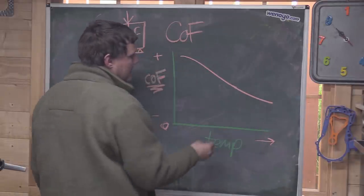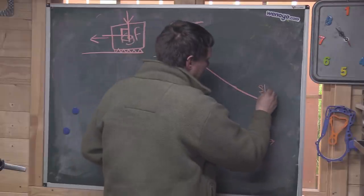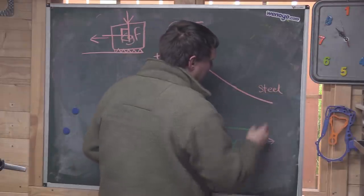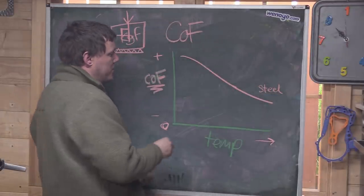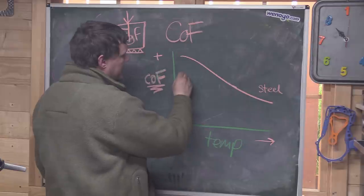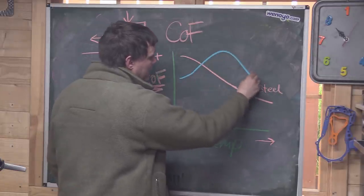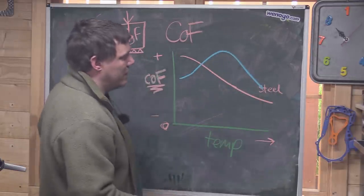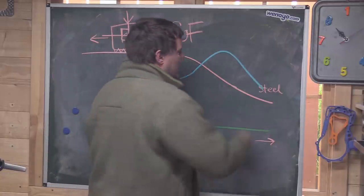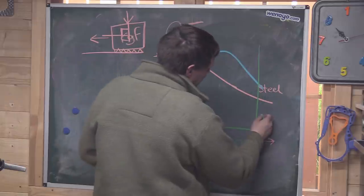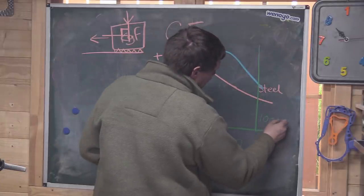We'll call that steel. So your steel discs, we'll call this one steel like that. The blue one is carbon. So it starts off specifically lower but it's got this going on.